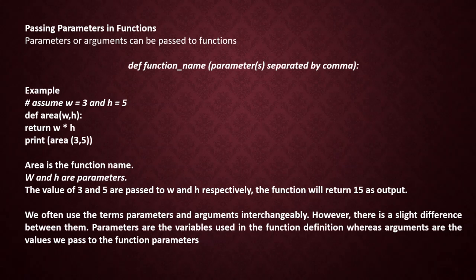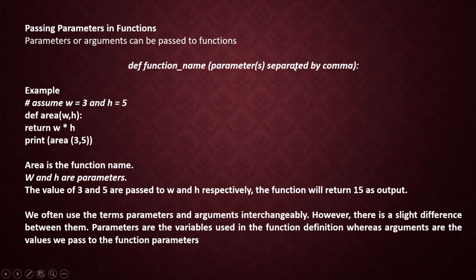Next: passing parameters in functions. Parameters or arguments can be passed to a function. If you want to pass a value into a function, parameters or arguments are necessary — they are the channels through which the values are passed to the functions. A parameter or argument is defined when we define a function. Within the parenthesis we define the parameters; if there are multiple parameters, they are separated by commas.